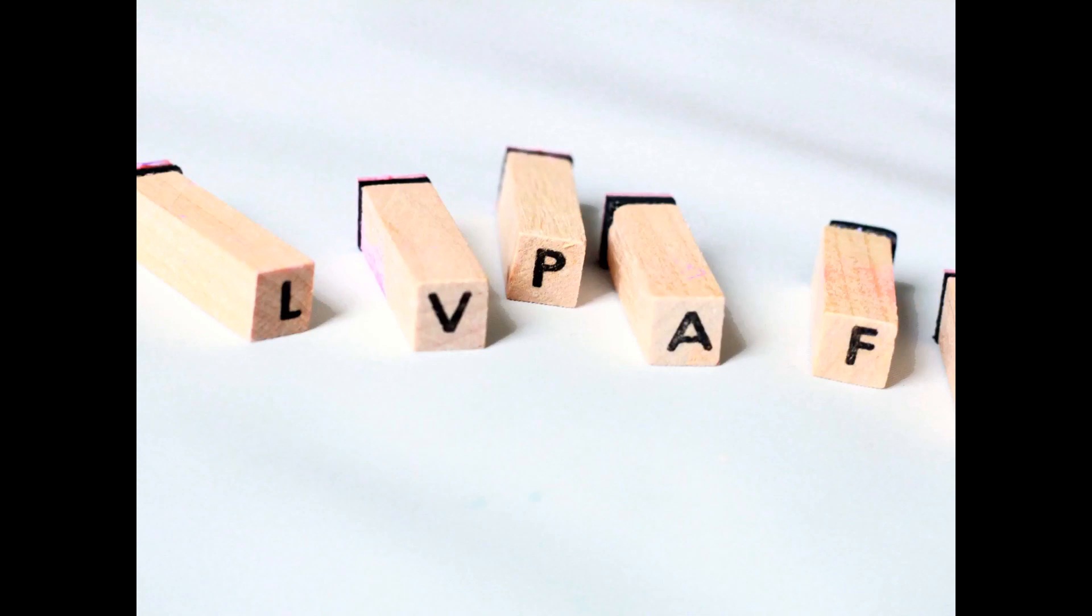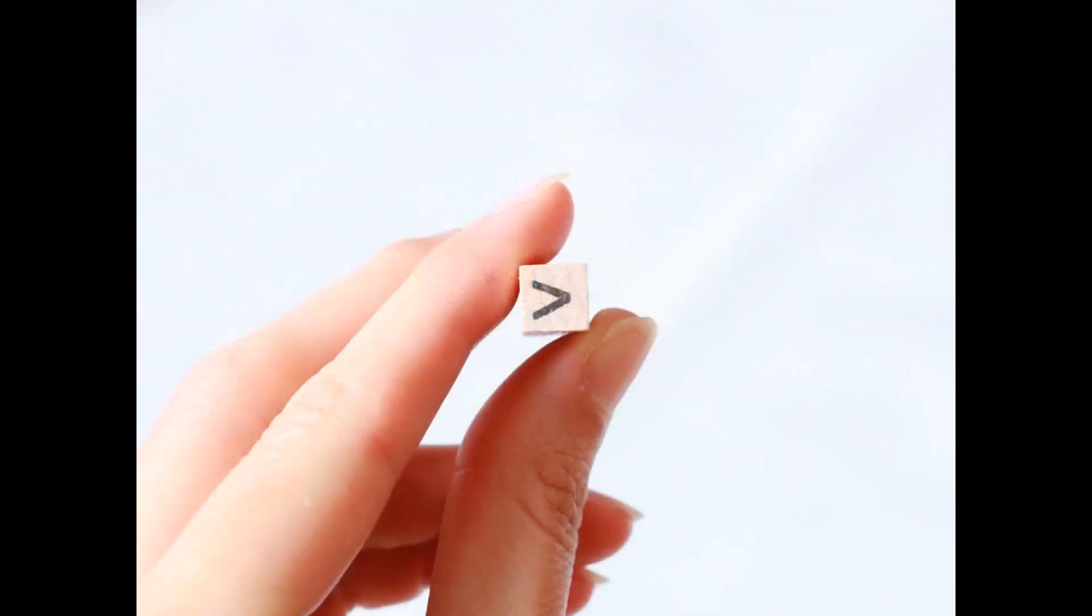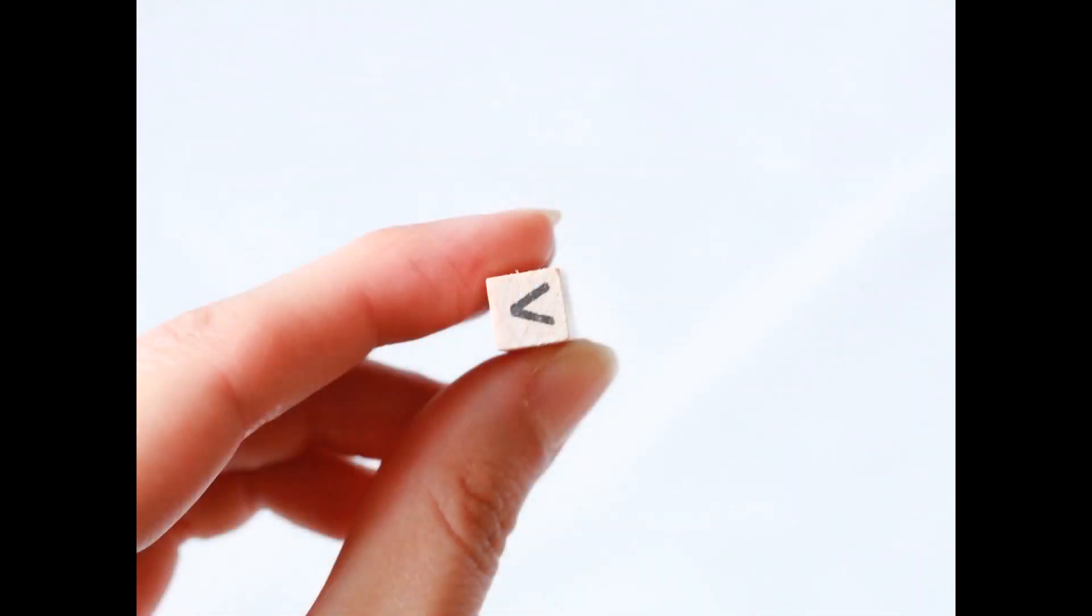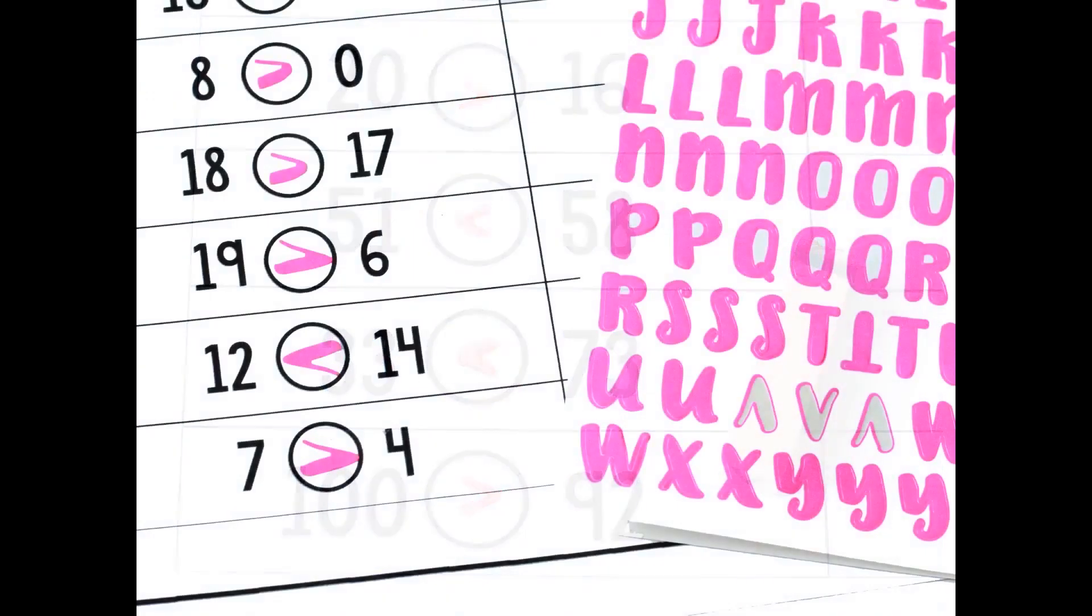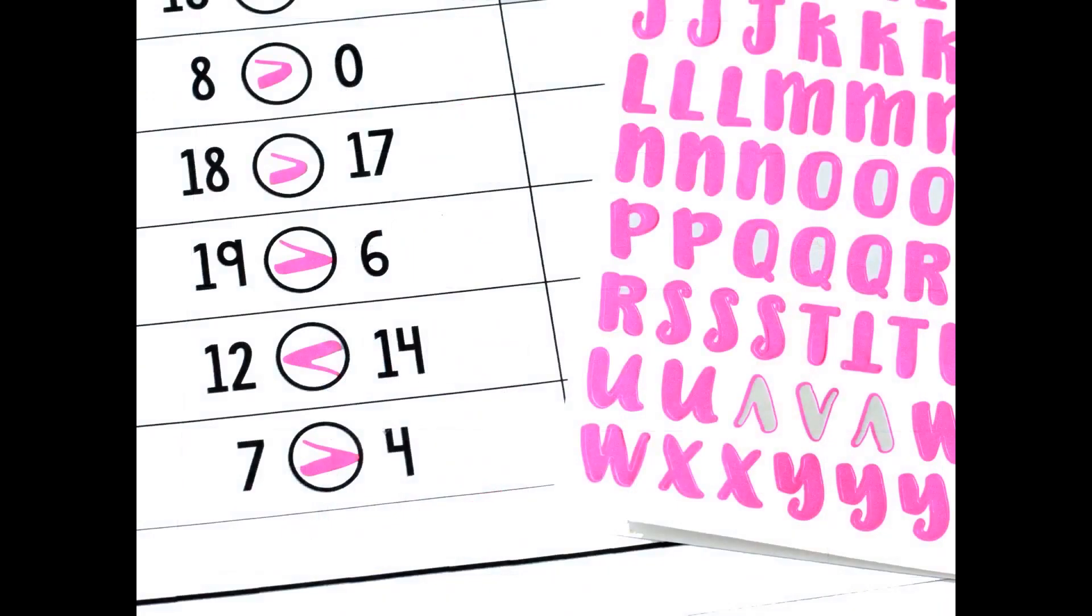If you have a set of alphabet stamps, you can easily use the letter V for a greater than, less than stamp. And allow your students to stamp the symbols in their worksheets instead of just writing it in. This could be a fun math center activity. Or if you have alphabet stickers, you probably have a lot of V stickers left over. So you can allow students to use the Vs as greater than, less than symbols to fill in their papers. This might not work for your whole class, but it might be great for a small math group or one or two students you're working with individually.